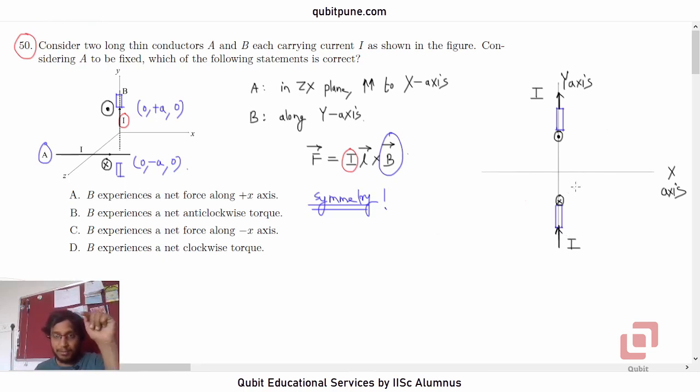So how are we going to do that? Let us consider the bottom part. Let us consider the current element which is below the z-x plane. Now let us use the left hand rule for cross product of vectors.